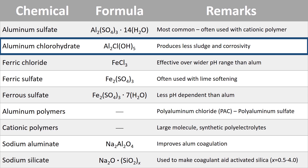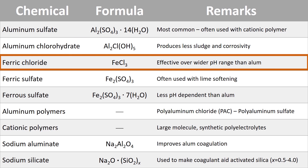Ferric chloride is the first of our iron salt coagulants, and it's effective over a wider pH range than alum. There are some applications where ferric chloride might be used rather than alum; however, it is very corrosive and it tends to stain the water treatment plant a rust color.